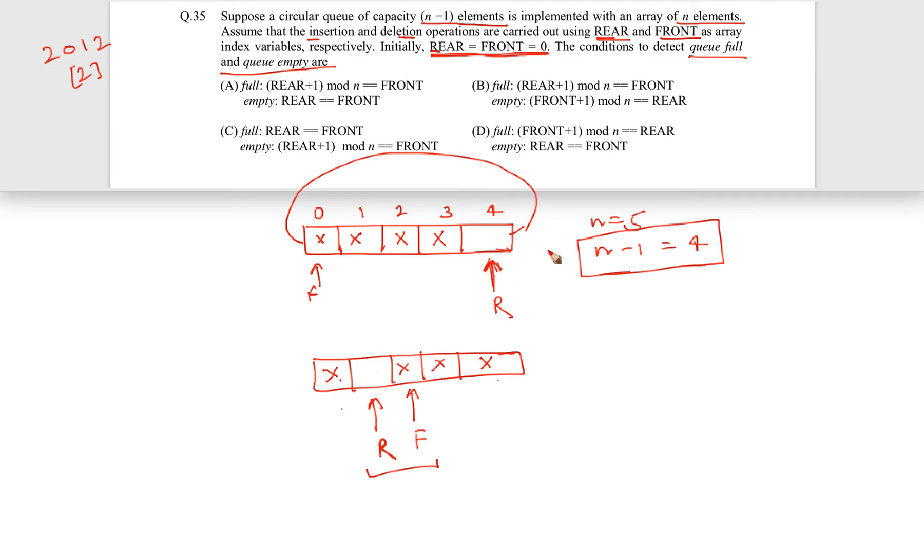Here you can clearly see that rear is one slot behind F. Here also that is the case because you can think of it obviously as a circular one. What will be the next slot after this? Actually this one and there is actually F is there. Basically what my point is that whatever place r is there, whatever index r is there, you add one and take mod n.